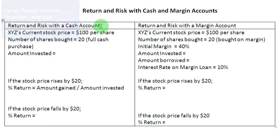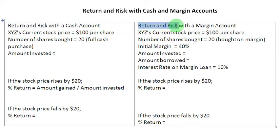We are going to assume some numbers and make a two-fold analysis. In this column of the table, we are going to look at return and risk for the investor when he or she buys some shares using a cash account. And in this column, we are going to repeat the exercise, but this time assuming that the purchase has been made by using a margin account.